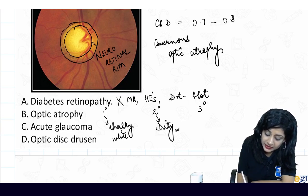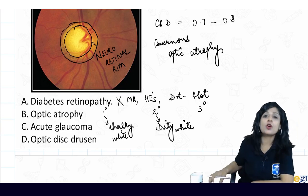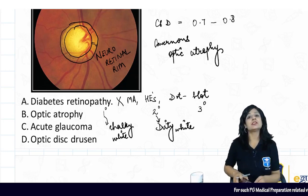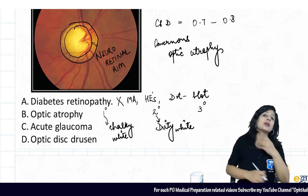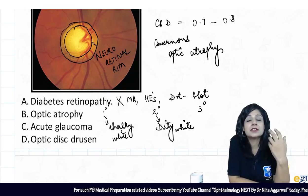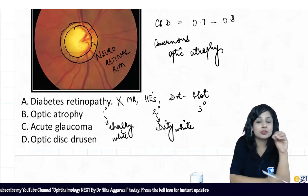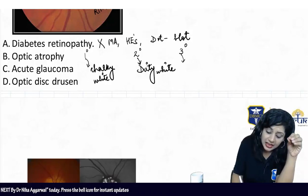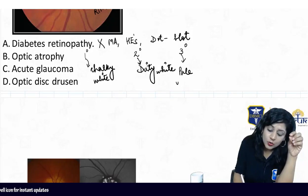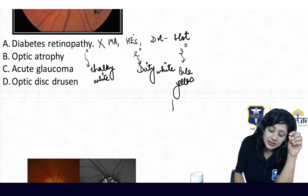In secondary optic atrophy, you get changes pertinent to the optic disc because it takes place after optic disc edema. In tertiary, we have a pale yellow waxy optic disc, like in retinitis pigmentosa. Option D is optic disc drusen. This is a photograph of optic disc drusen.